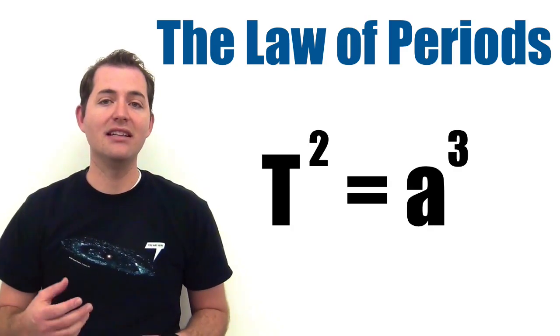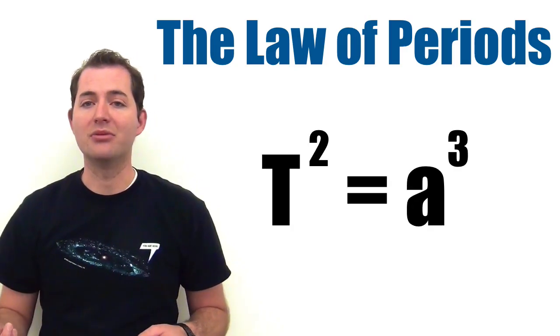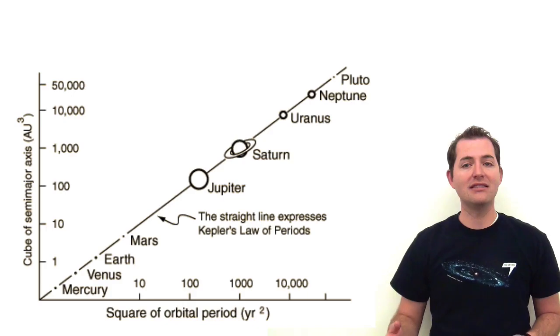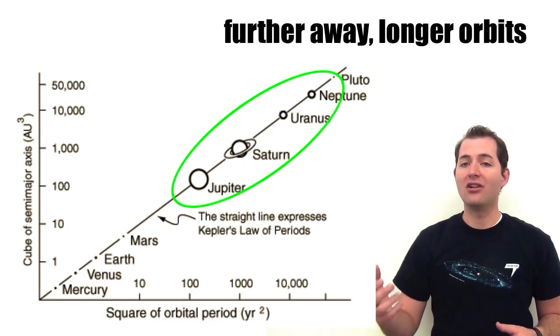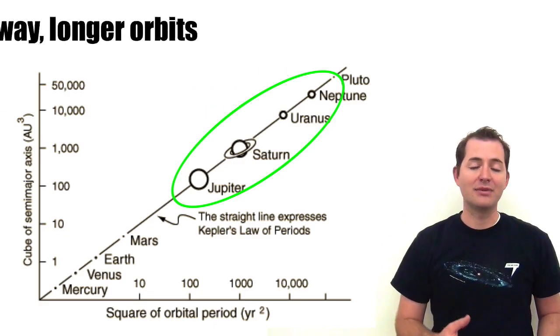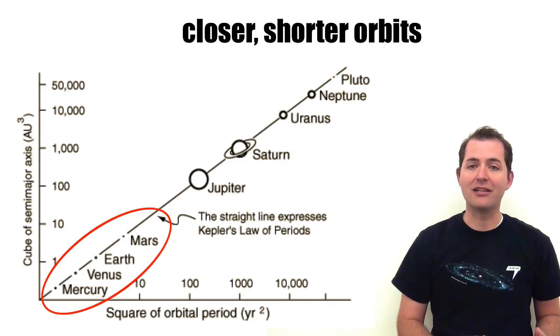This is often written as t squared equals a cubed. Now we can look at this graph and see that planets that are further from the sun, like Neptune, take longer to orbit than planets which are closer to the sun, like Mercury.